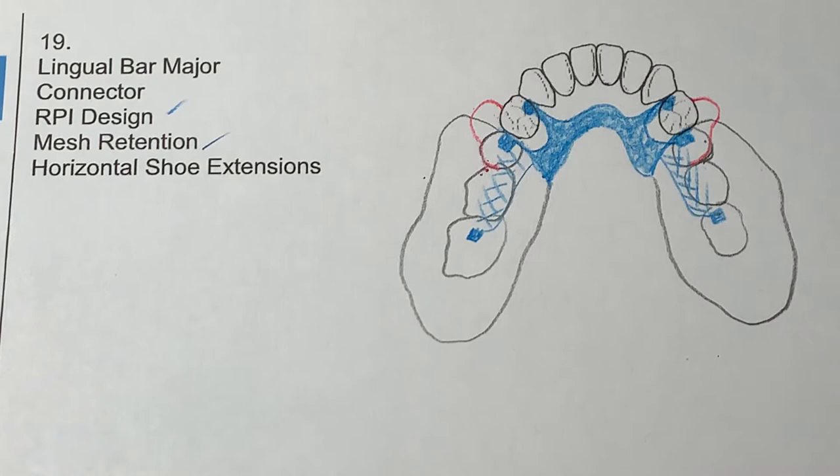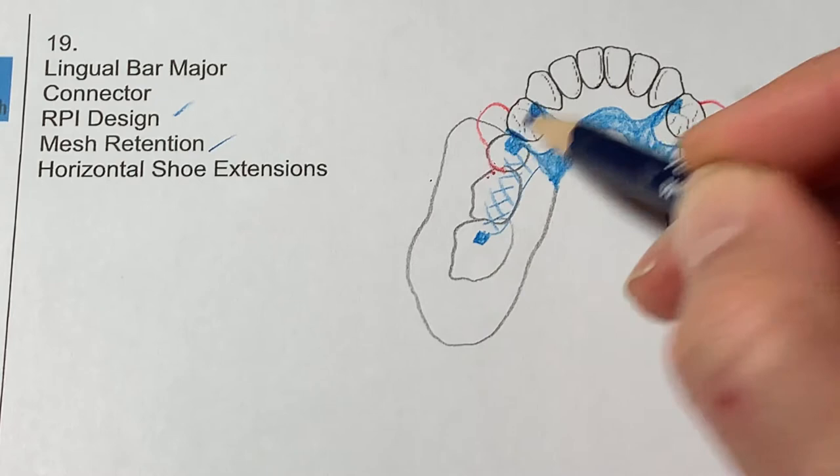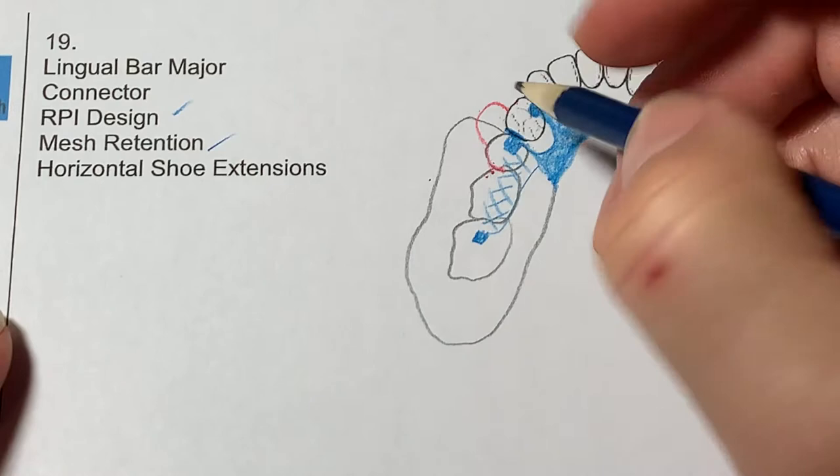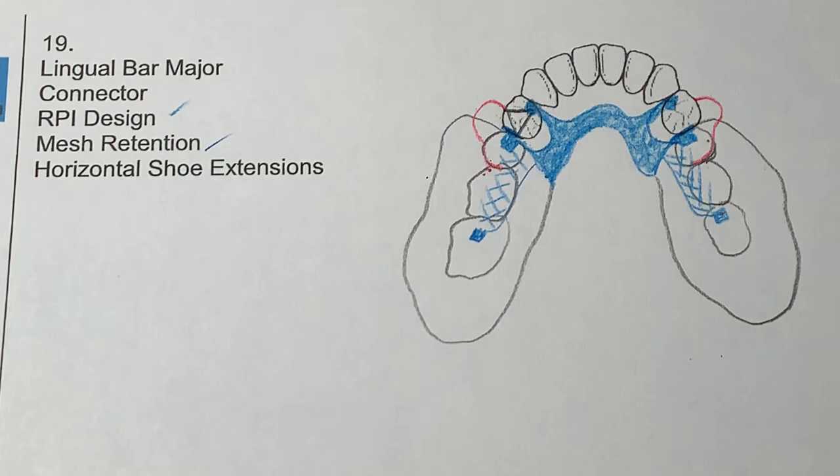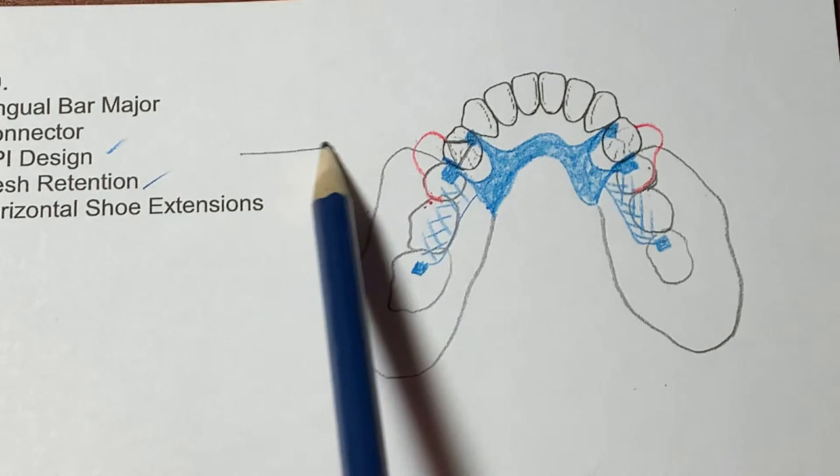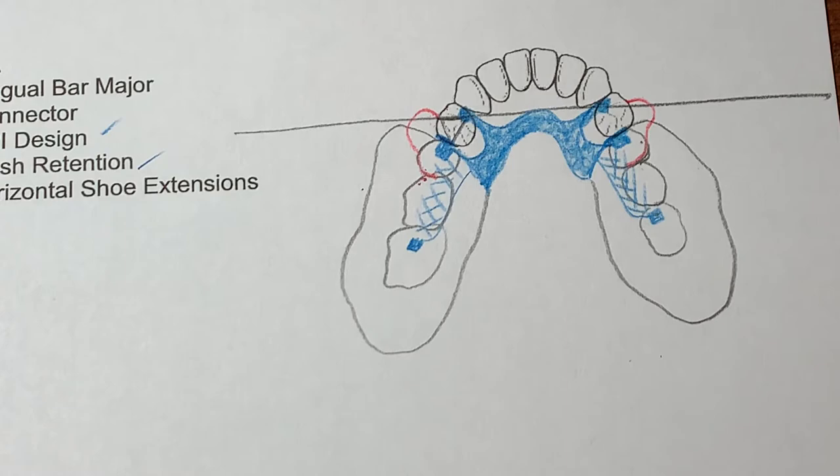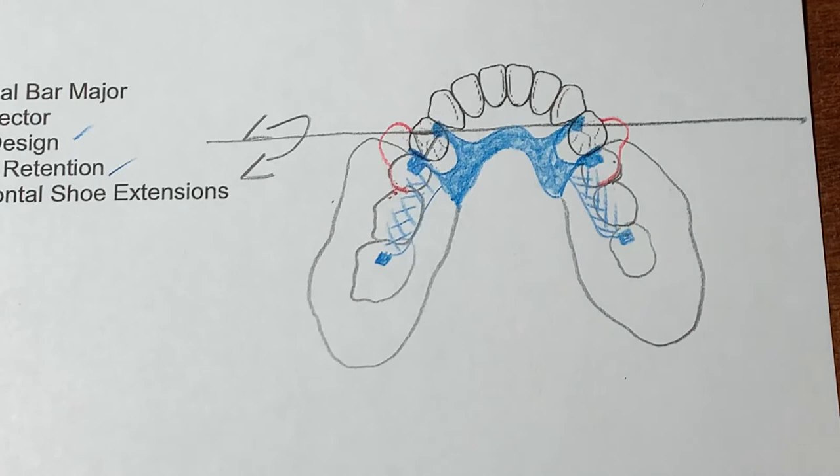So this is our classic RPI design. This is the classic RPI design that doesn't require a reciprocal arm. It has three-point contact, the proximal plate which is the guide plane, the rest, and the I bar. And if you can see that this kind of triangular or three-point contact of the tooth. And this here will stabilize the tooth, acting in reciprocation in itself. Now we know from studying class 1 that there is a fulcrum line, this imaginary line drawn through the two most terminal rests, or two most distal rests. There's a rotation around this fulcrum line, which is going to require us some indirect retention.